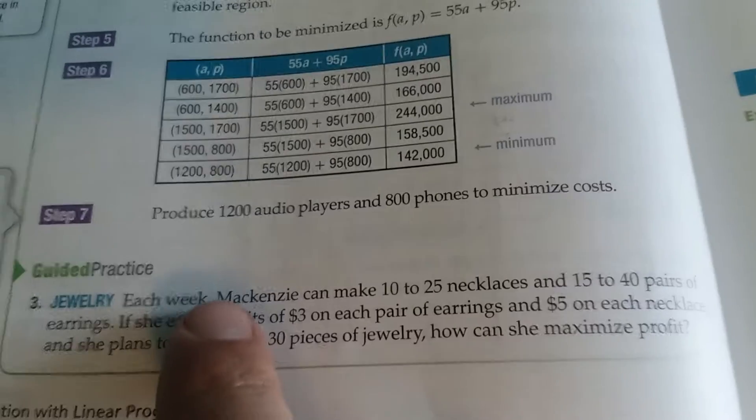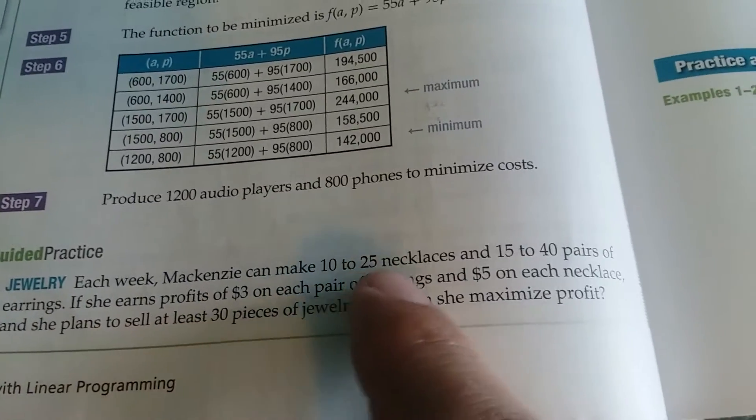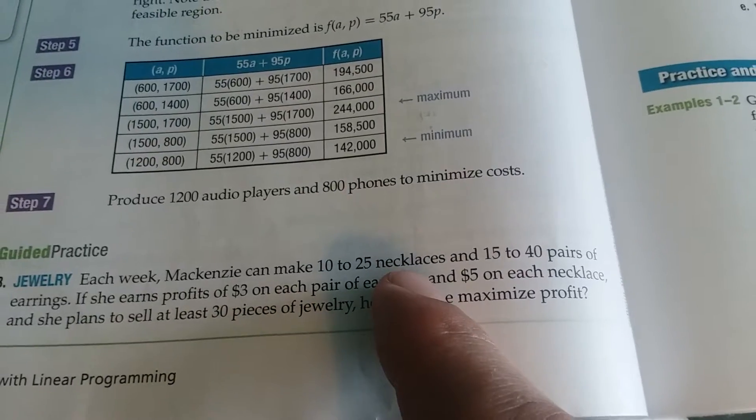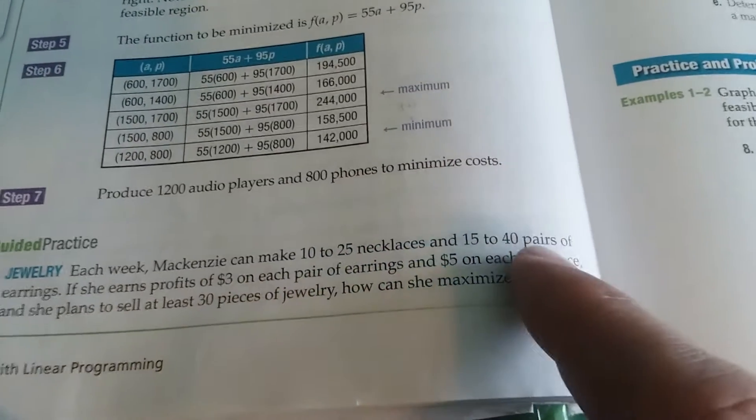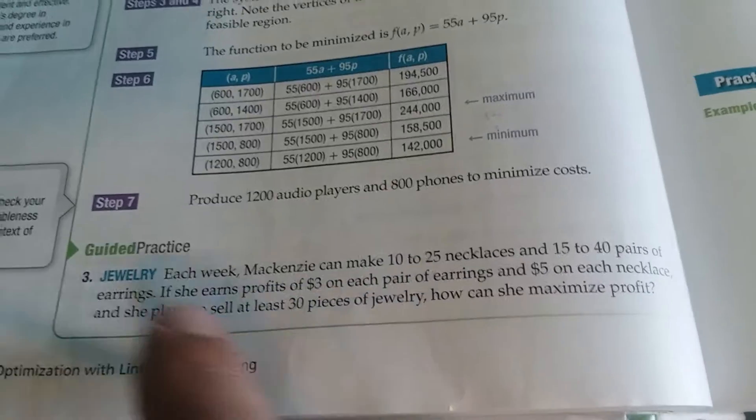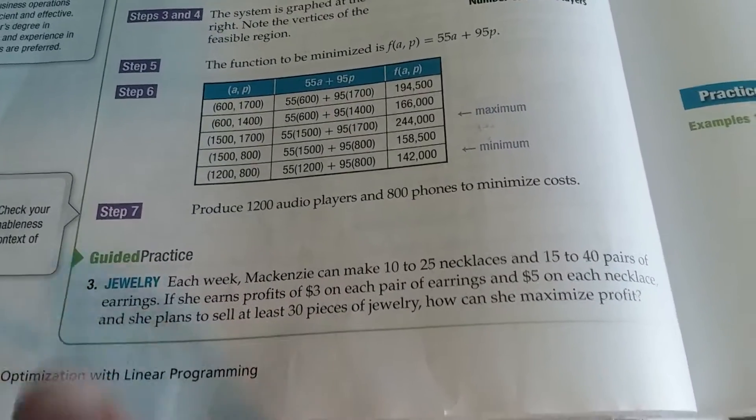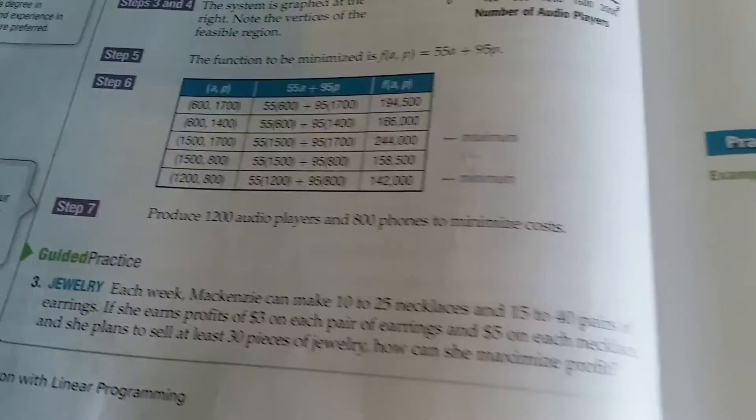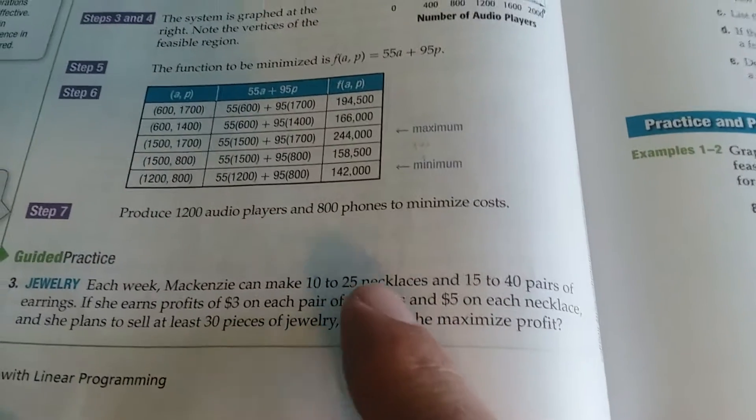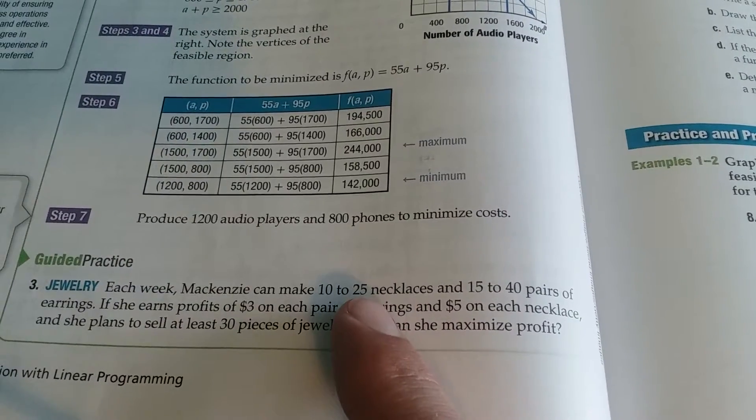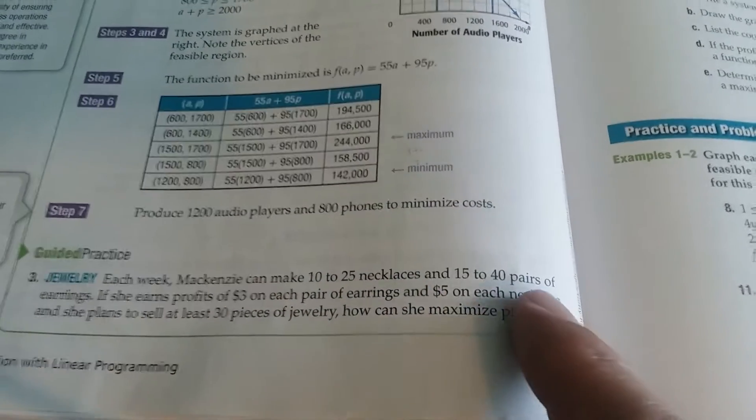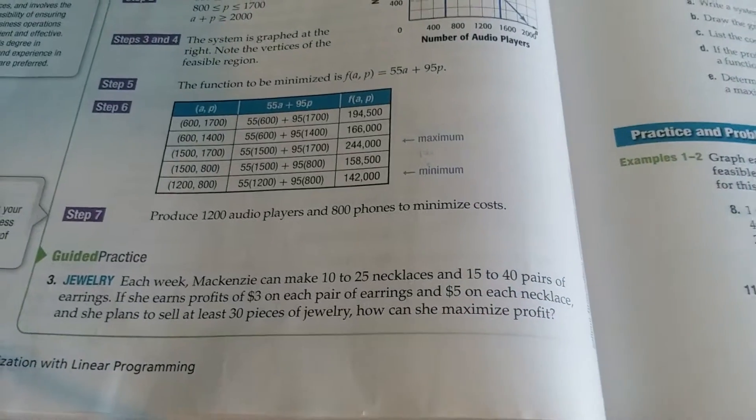So we're going to let each week McKenzie can make 10 to 15 necklaces. I'm going to just let necklaces be X. And 15 to 40 pairs of earrings. I'll let earrings be Y then. It's easier if we use X and Y. So I'm just going to let necklaces be X because they become first in the sentence, and I'm going to let earrings become Y because they become second.